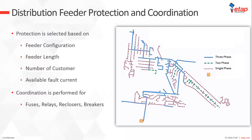Not only do we want our system to work perfectly, we want to coordinate it and have selectivity. Coordination in distribution feeders is a challenge in itself. We need to coordinate between all different kinds of protective devices — fuses, relays, reclosers, low voltage breakers, medium voltage breakers — so that we do not reduce the reliability or selectivity of the system by opening the wrong breaker.